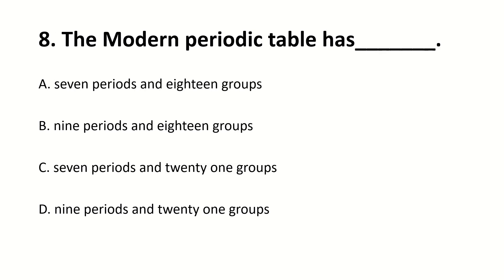The modern periodic table has? The right answer is A, seven periods and 18 groups.